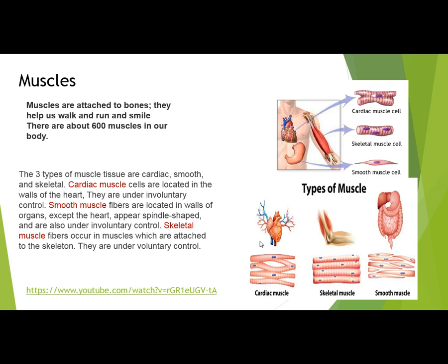The three types of muscle tissues are cardiac, smooth and skeletal. There are three main muscle tissues in our body: number one — cardiac, number two — skeletal, and number three — smooth. If we are talking about cardiac, cardiac muscles are our heart.